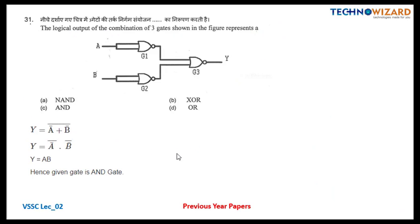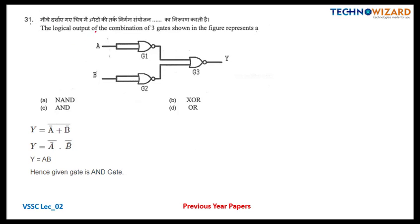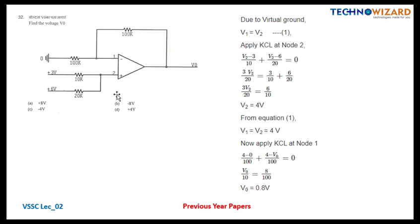Question number 31: the logic output of the following three gates. When two inputs are combined through NAND gates it works as a NOT gate, giving A-bar and B-bar. Then A-bar·B-bar whole bar by De Morgan's theorem gives A+B... wait — the result is A·B, so the given gate combination acts as an AND gate. Option C is the correct answer.